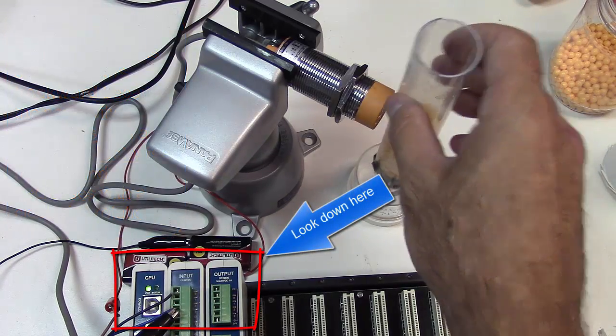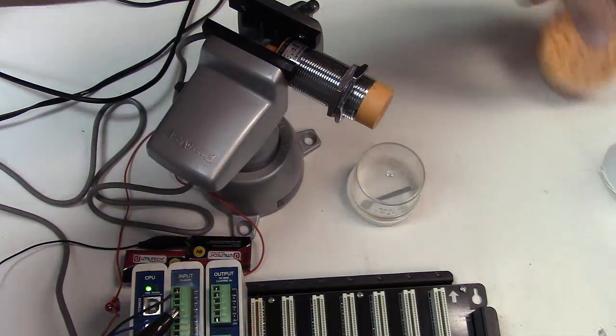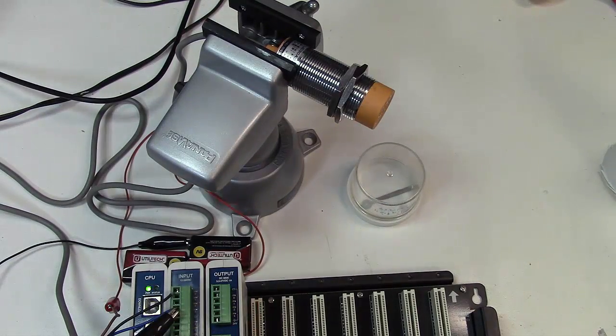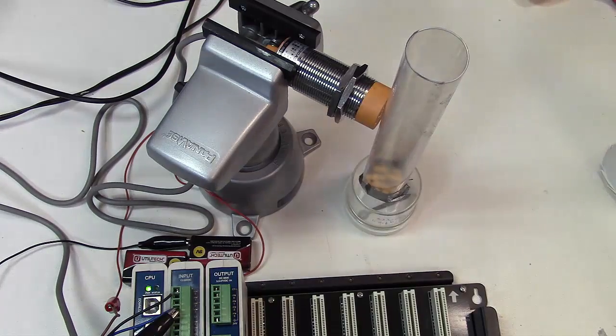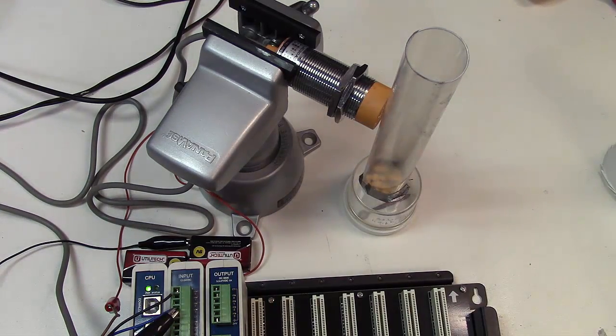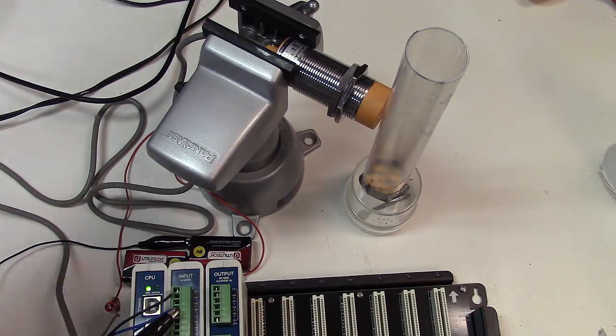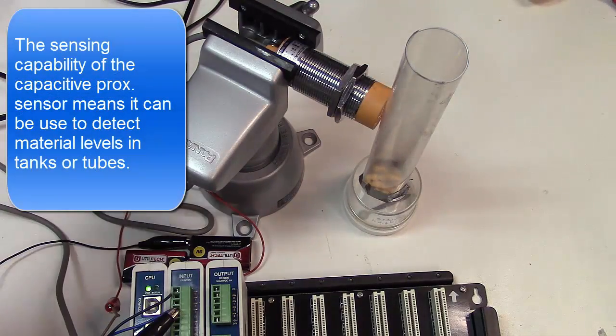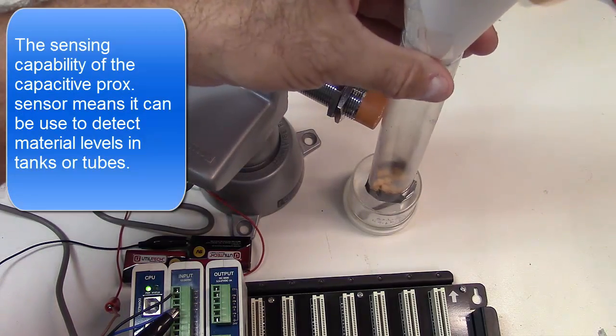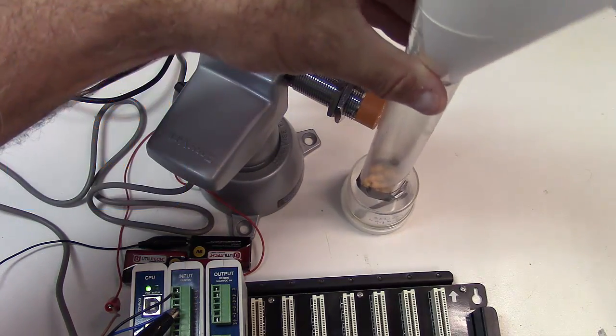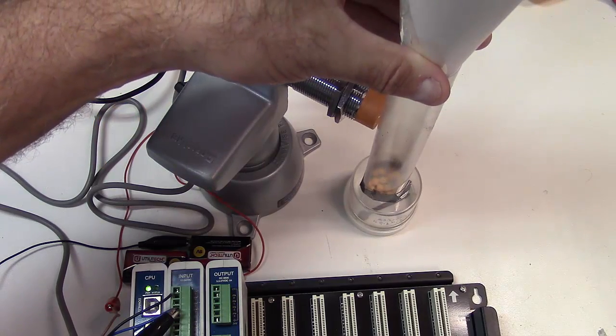So this suddenly opens up a lot of doors, we can do a lot of things with this. Let's imagine we've got a situation where we have to detect some material flowing in a tube. Maybe it's a storage container and when the level of the material gets high enough in that storage container, then we want an activation. So I'm going to put a little funnel here on the top and I'm going to start pouring this material in here and watch the PLC.